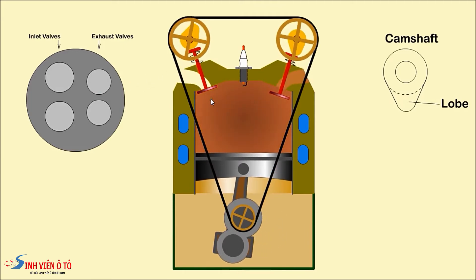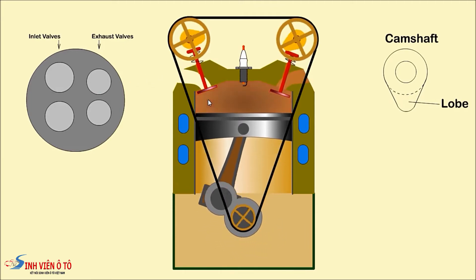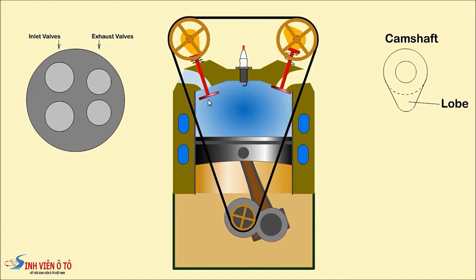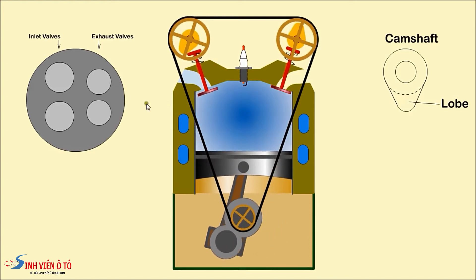Usually inlet ports are larger than exhaust ports as it is more difficult to get air into the cylinder. Early engines had only one inlet and one exhaust valve per cylinder. Modern engines usually have two inlet and two exhaust valves.